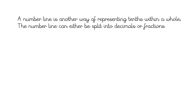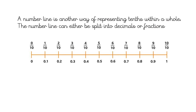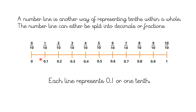A number line is another way of representing tenths within a whole. The number line can be split into decimals or fractions. Here we have a number line stretching from zero to one: one tenth is 0.1, two tenths is 0.2, three tenths is 0.3, four tenths is 0.4, and so on. This is how we talk about numbers that are less than one. Each gap between lines represents 0.1, or one tenth.